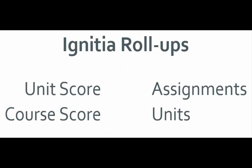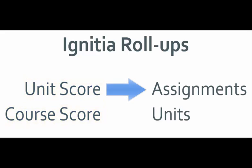Ignitia currently has two available roll-ups: the unit score roll-up and the course score roll-up. The scope of the unit roll-up is all of the assignments in that unit. Similarly, for the course, its roll-up contains all of the units in the course.